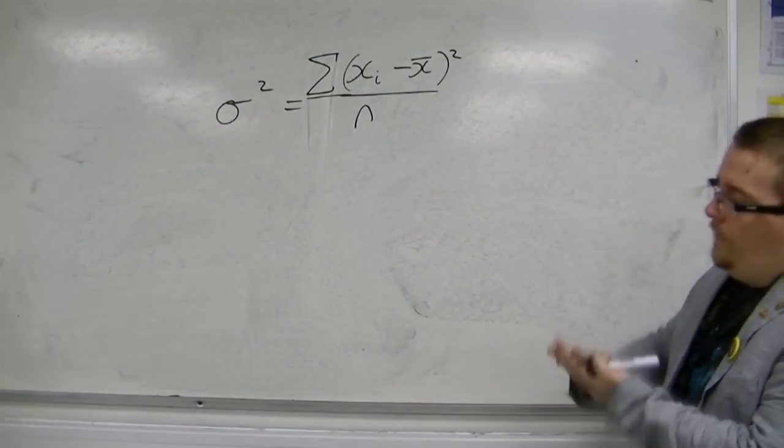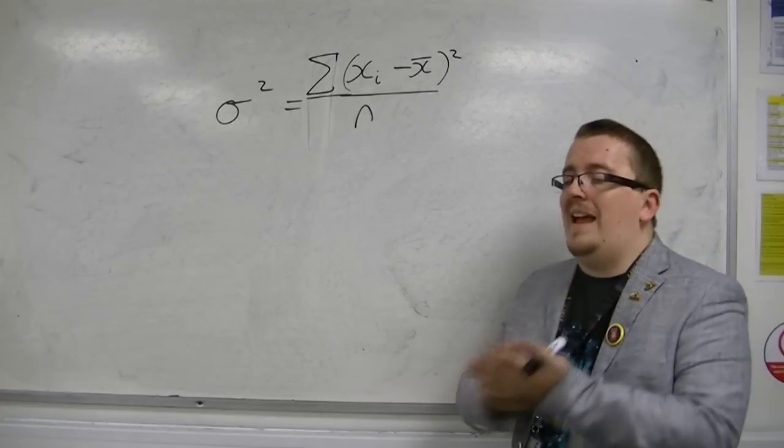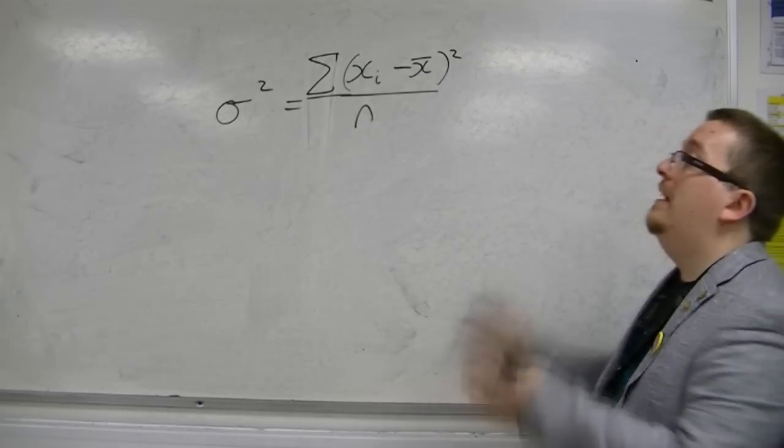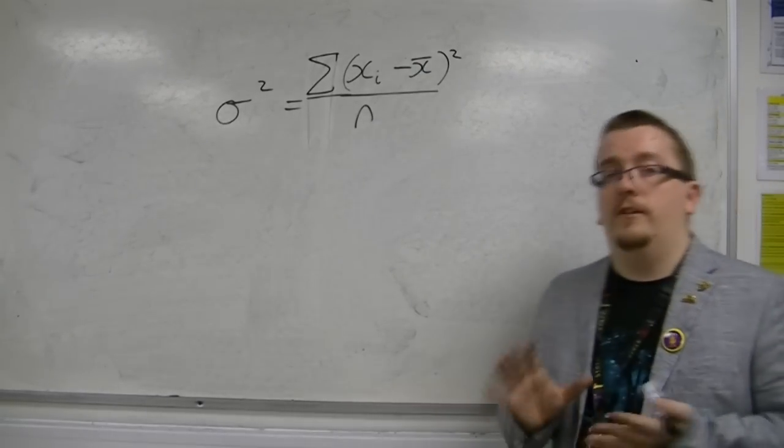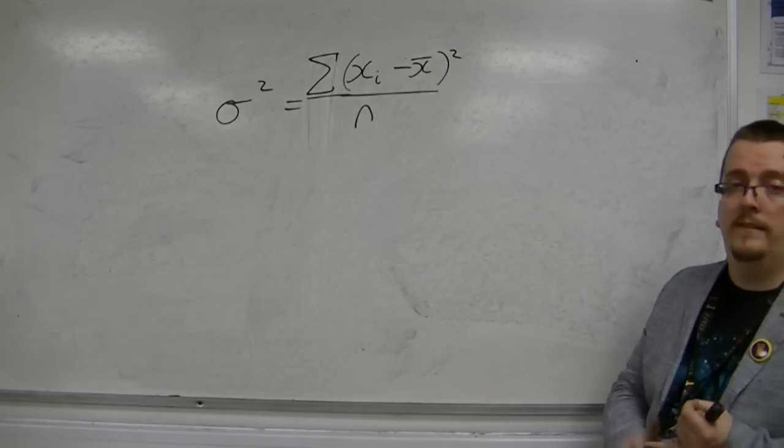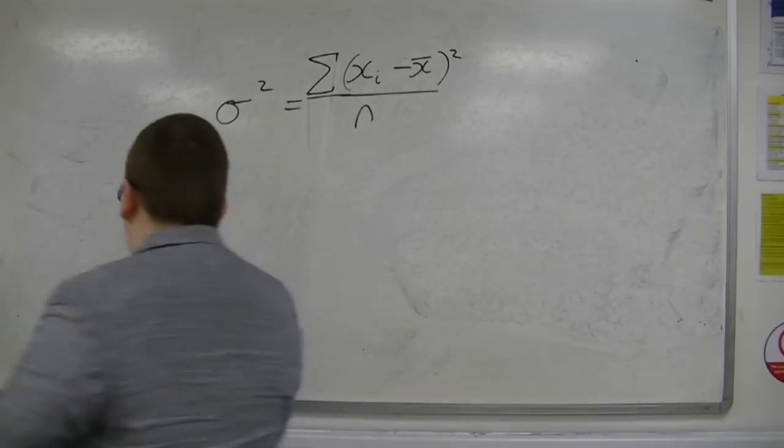Now, if you're doing it for a sample and you want to use it as an estimate for the population variance, this isn't quite good enough. This gives you a biased estimator, it turns out. We want an unbiased estimator.